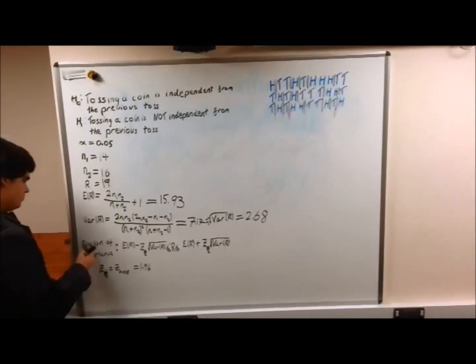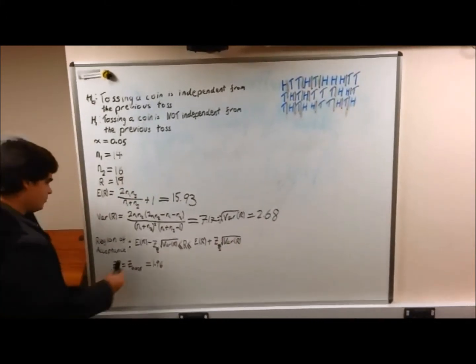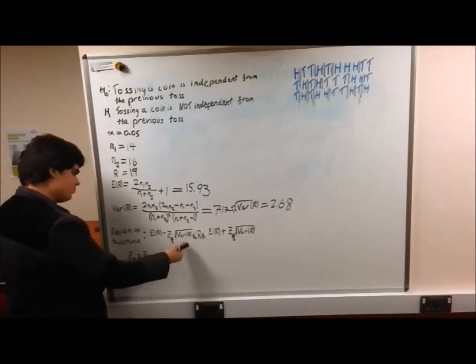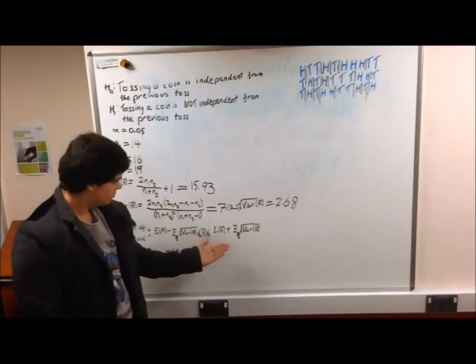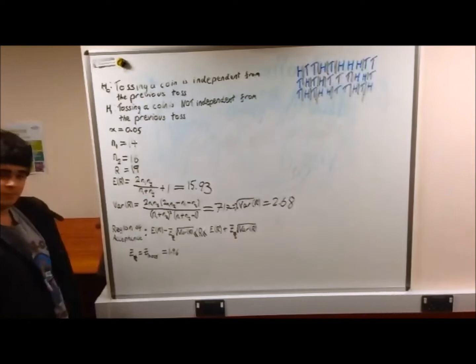Next, we work out the region of acceptance, which is the expected value of R minus 1.96 times the square root of the variance of R, which is smaller than or equal to R, which is smaller than or equal to the expected value of R plus 1.96 times the square root of the variance of R.